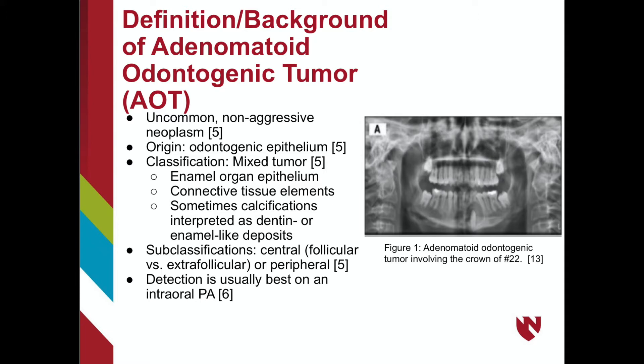Figure 1 shows a panoramic radiograph depicting an adenomatoid odontogenic tumor involving the crown of tooth number 22 in a 12-year-old female patient.